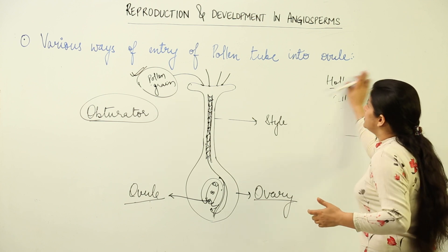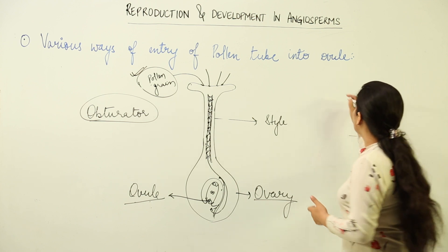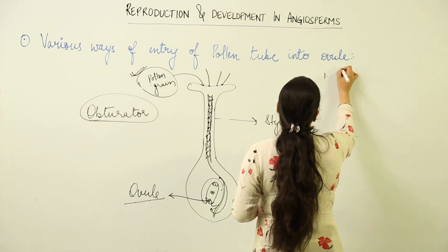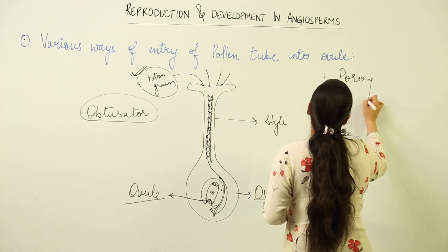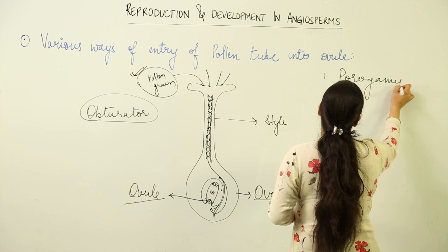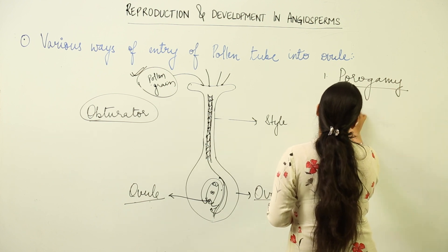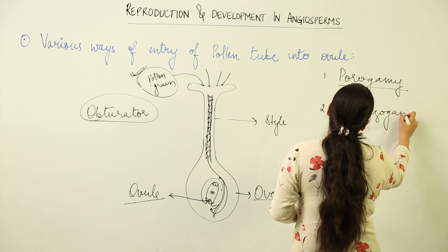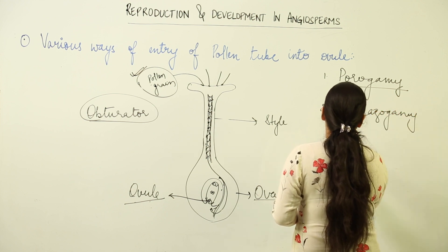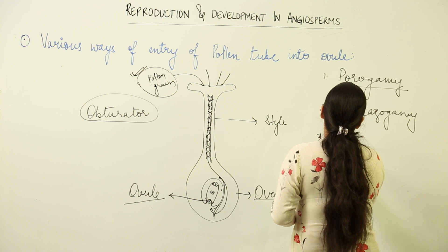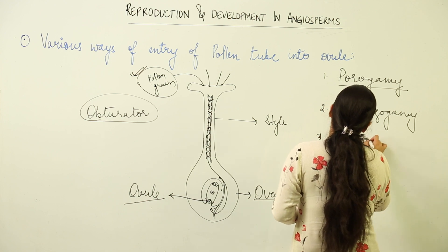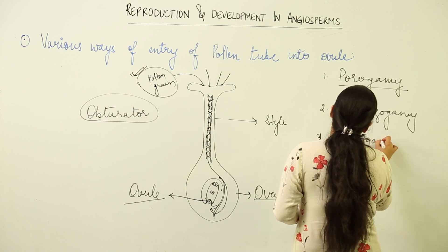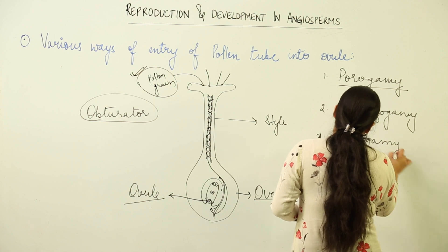Entering the ovule could take place in three different manners. What are those different ways? The first one is porogamy. The second one is chalazogamy. And the last one is misogamy. These are the various methods in which the pollen tube can enter into the ovule.